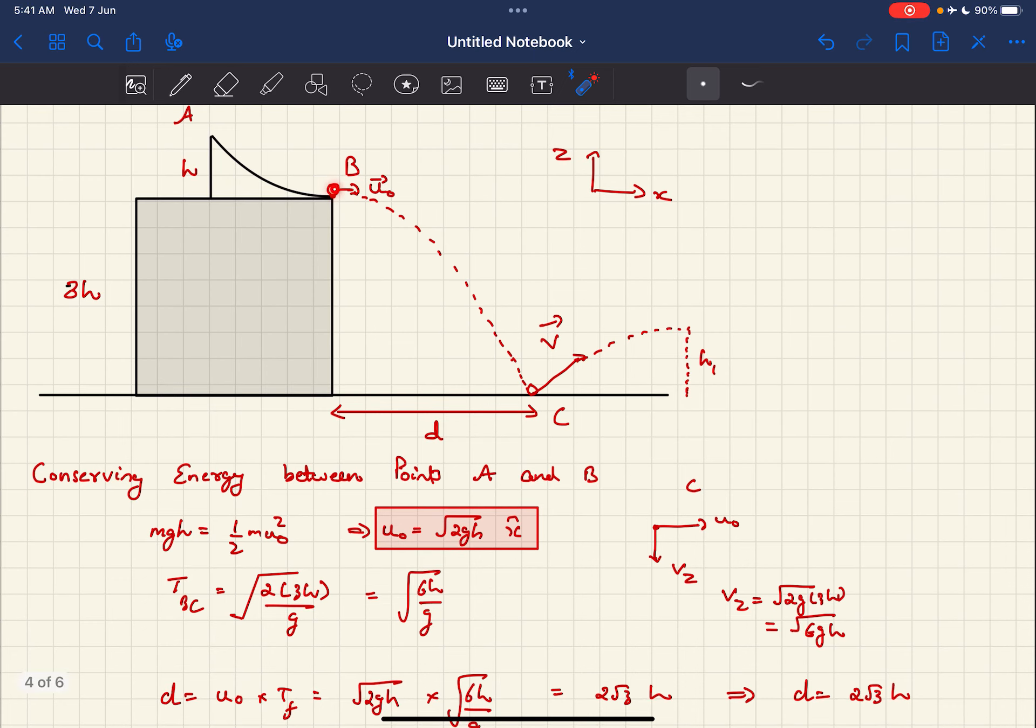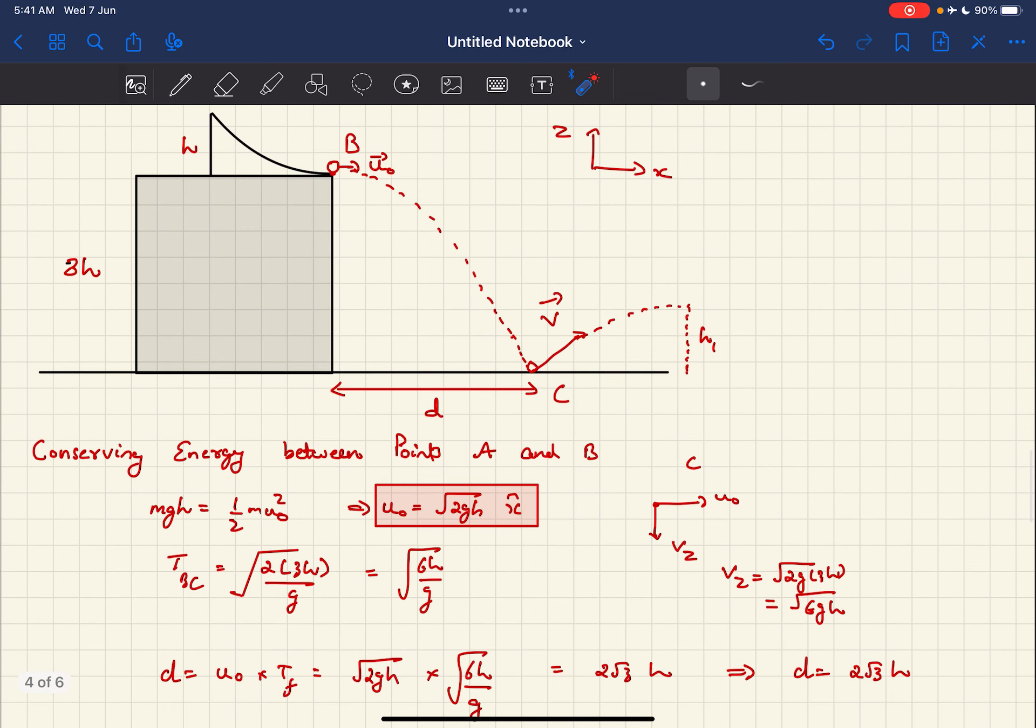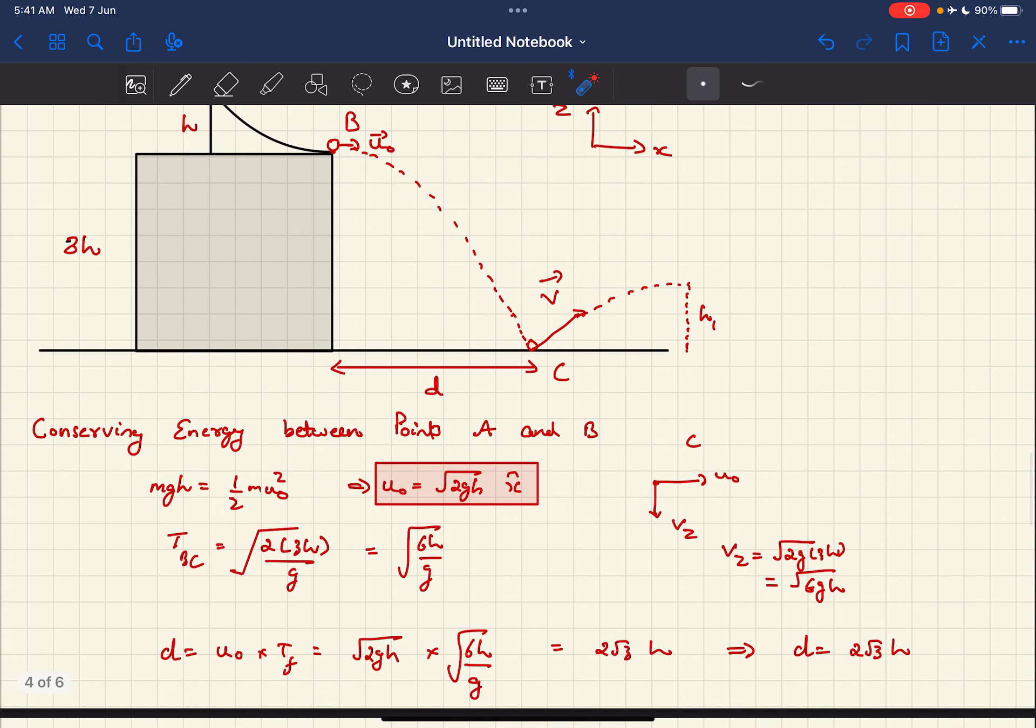In this horizontal projectile motion, we can find the time of flight as √(2H/G), where H is the height through which it falls, which in this case is 3H. That is the height of this terrace. After you calculate that, it comes out to be √(6H/G).